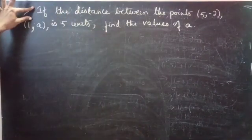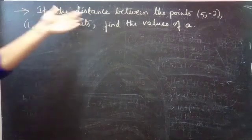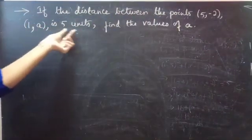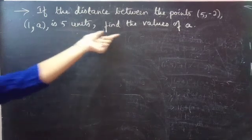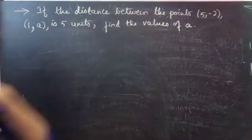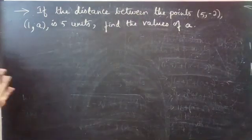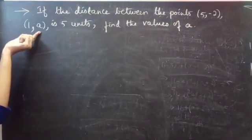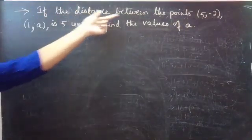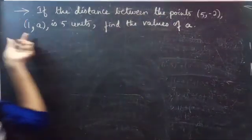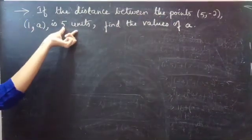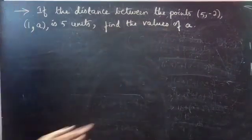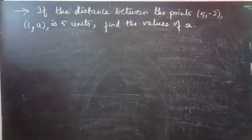Here is the problem. We are given 2 points and the distance between the 2 points is 5 units. We have to find the values of A.